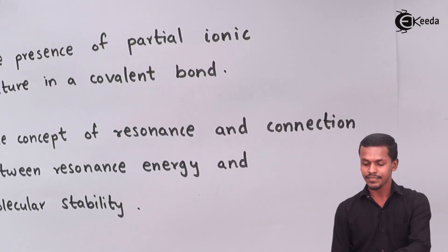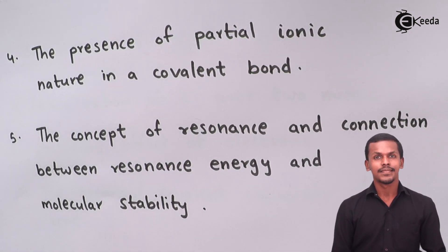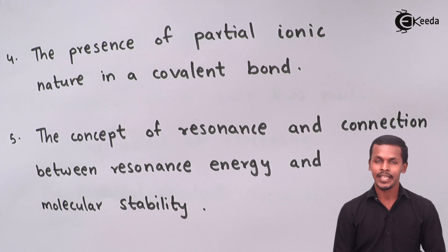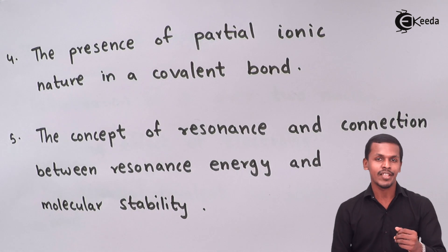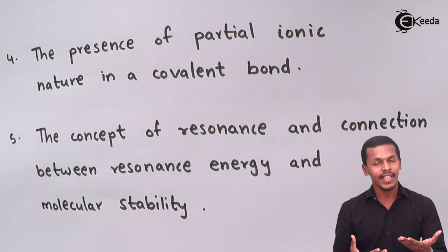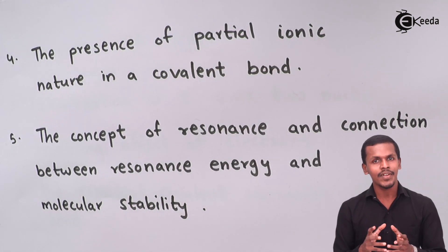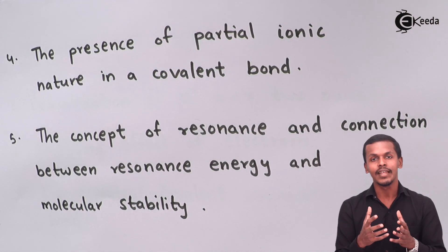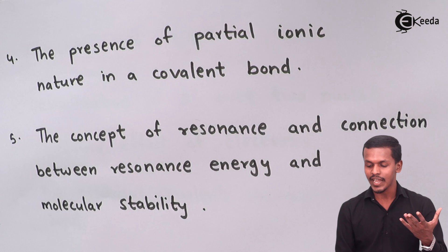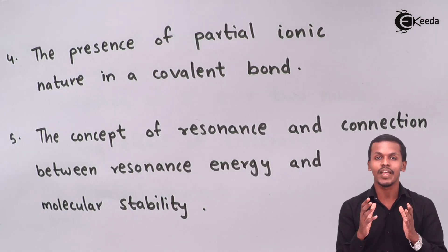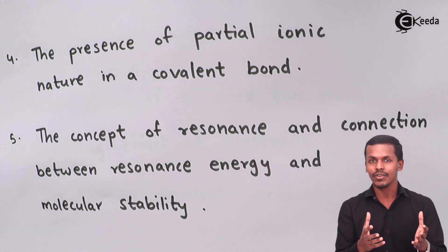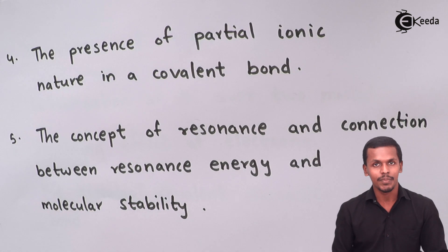The next importance is the presence of partial ionic nature in a covalent bond, which was also explained by VBT. For example, in HF, a covalent bond is formed by sharing of electrons, but fluorine is more electronegative. As a result, the covalent character decreases and the polar character increases, giving rise to partial ionic nature. Thus, ionic character can also be explained by the valence bond theory.